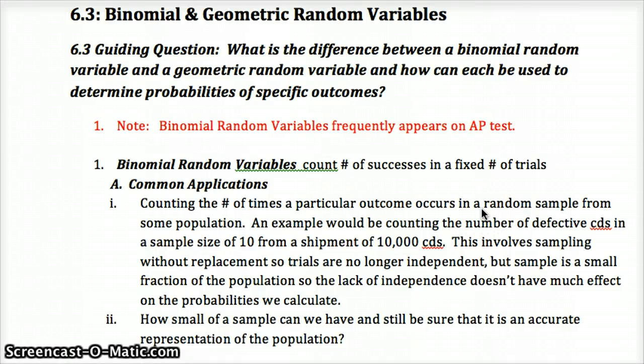This is Chapter 6, Lesson 3 on Binomial and Geometric Random Variables. We've already covered binomial, introduced it in class, so you'll get a sense of what that is hopefully through here. As you go through this, think about what the difference between binomial random variable and geometric random variable is, and how each can be used to determine probabilities of different outcomes.